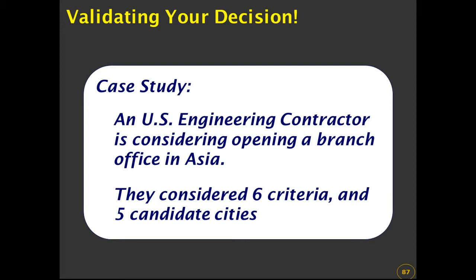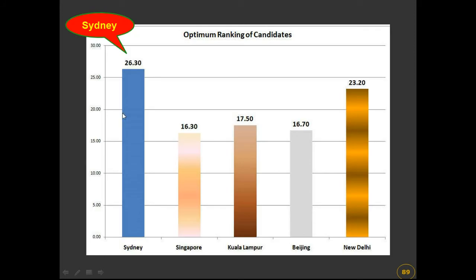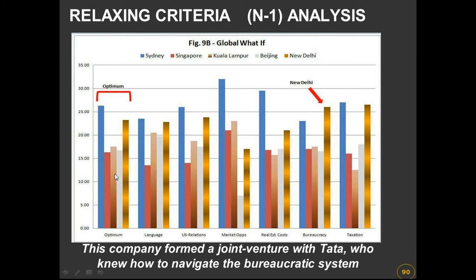Here's another quick example: a US engineering contractor is considering opening a branch office in Asia. They considered six criteria and five candidate cities. As before, we run the software and Sydney is the preferred choice. But when we look at the n-minus-one analysis we see something very interesting — again we have the original evaluation and the sensitivities.